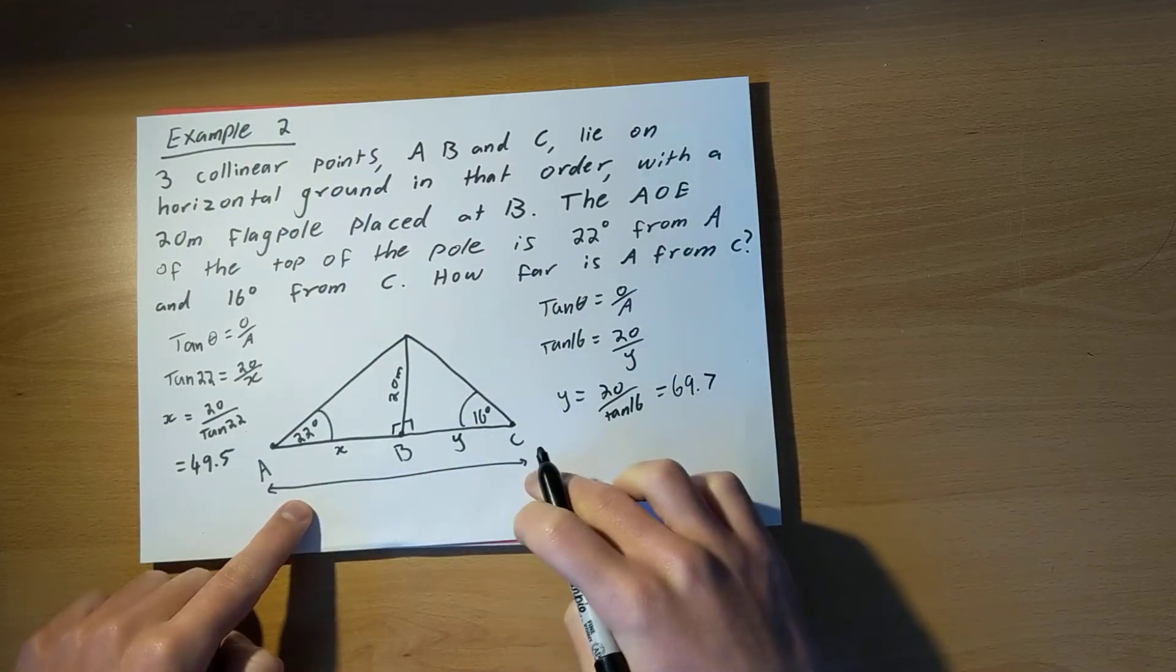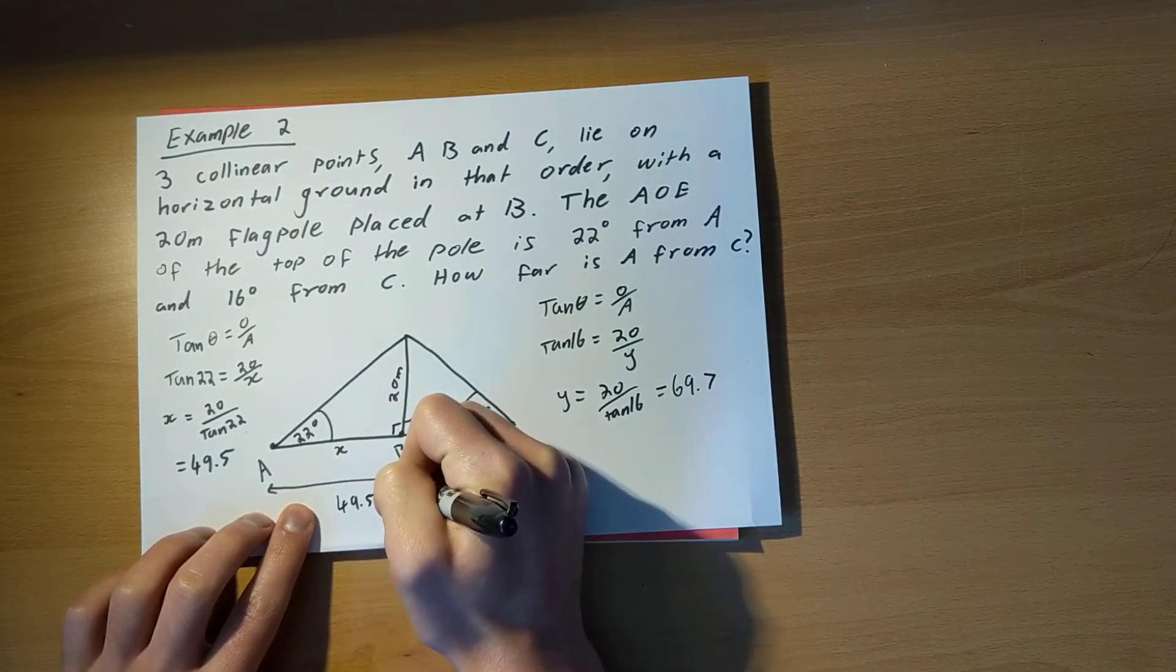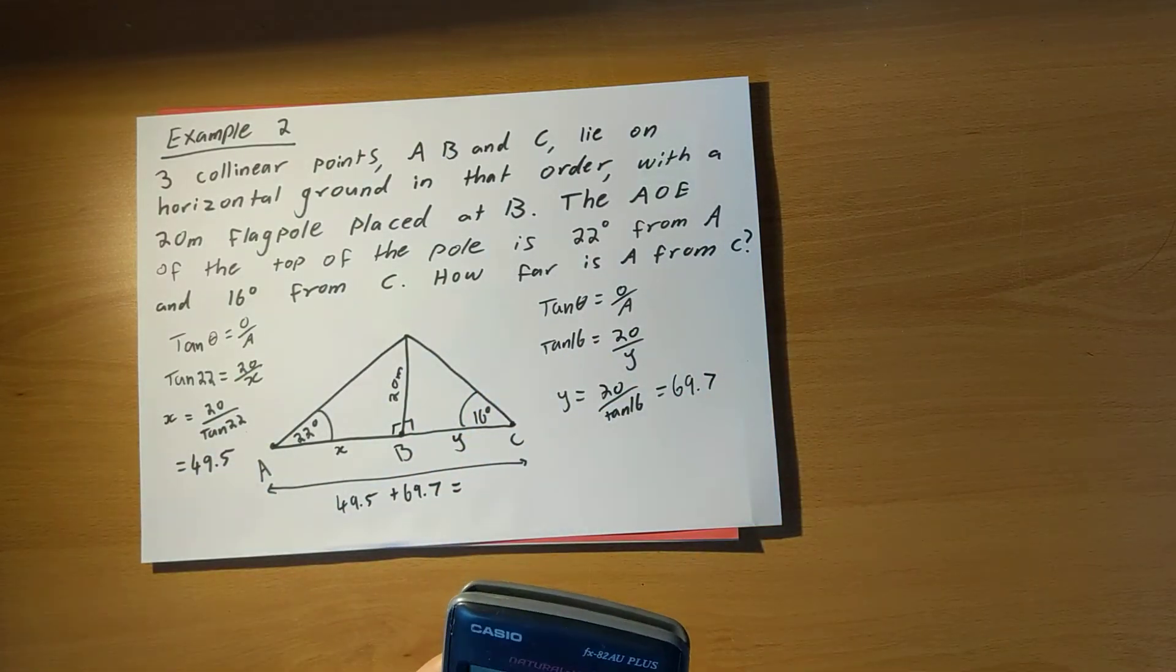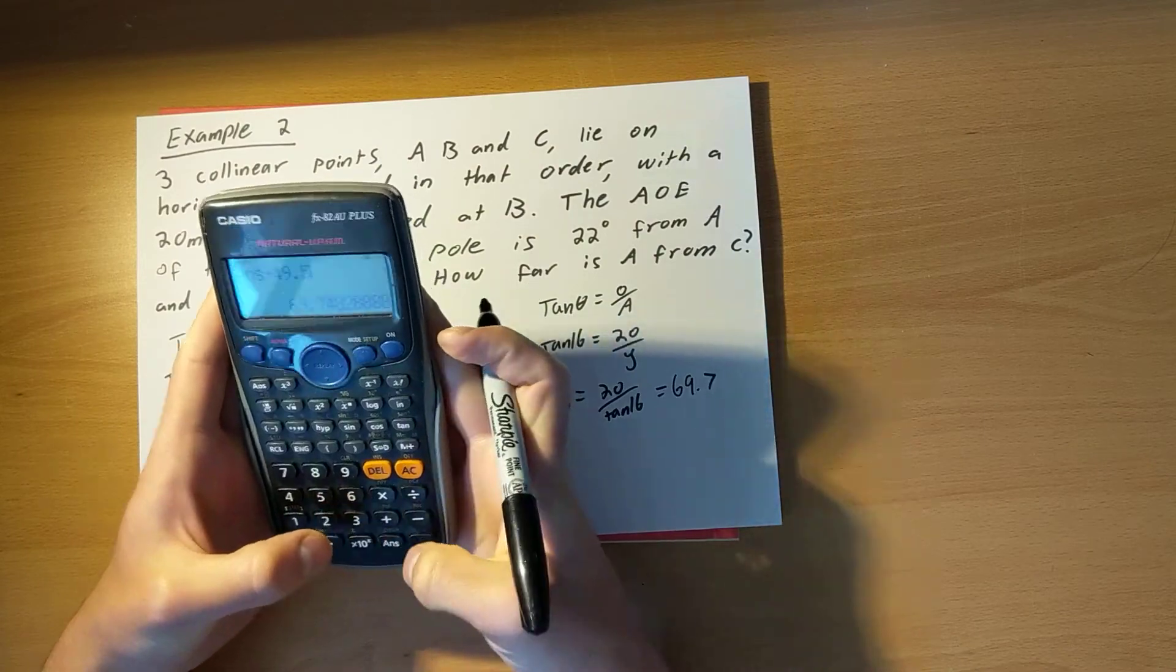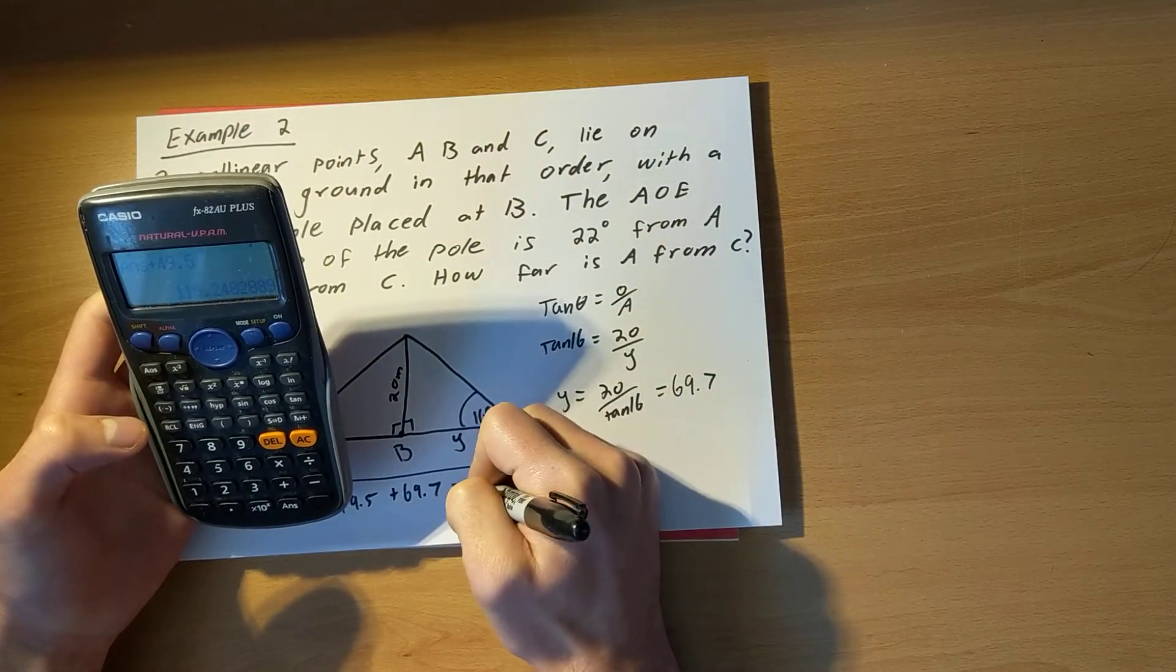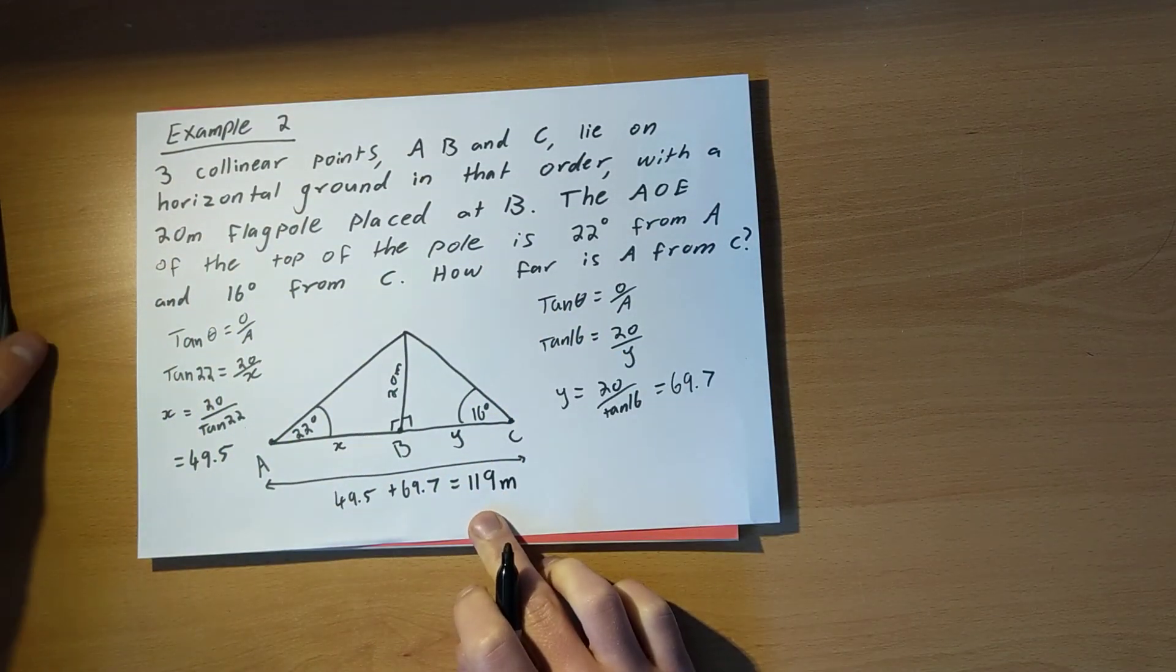So altogether, this length here is going to be 49.5 plus 69.7, which gives me a total distance of 119 meters. That is rounded to the nearest meter.